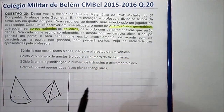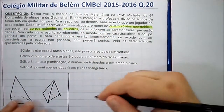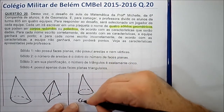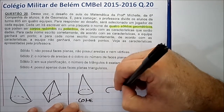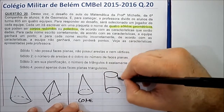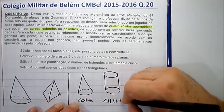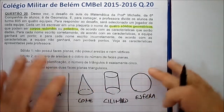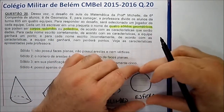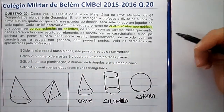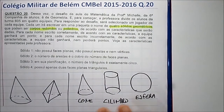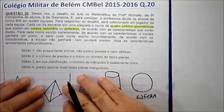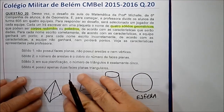Basicamente existem três tipos de corpos redondos: o cone, o cilindro e a esfera. Na verdade existem outros corpos redondos — você pode achatar a esfera, por exemplo, e ela continua sendo um corpo redondo. Mas para efeito desse problema, só aparecem três: cilindro, cone e esfera. Os outros, formados por polígonos, como essa pirâmide, são chamados de poliedros.